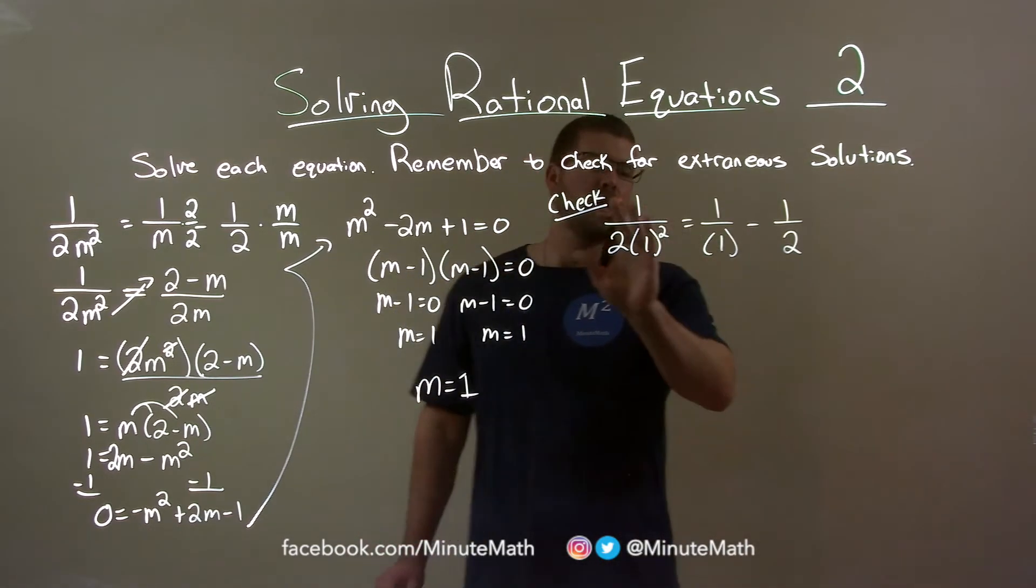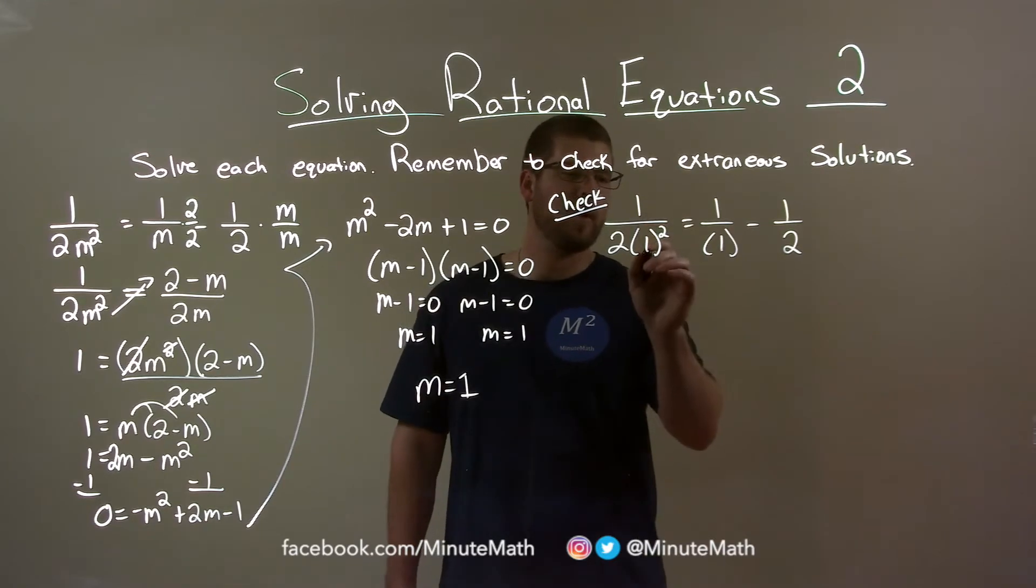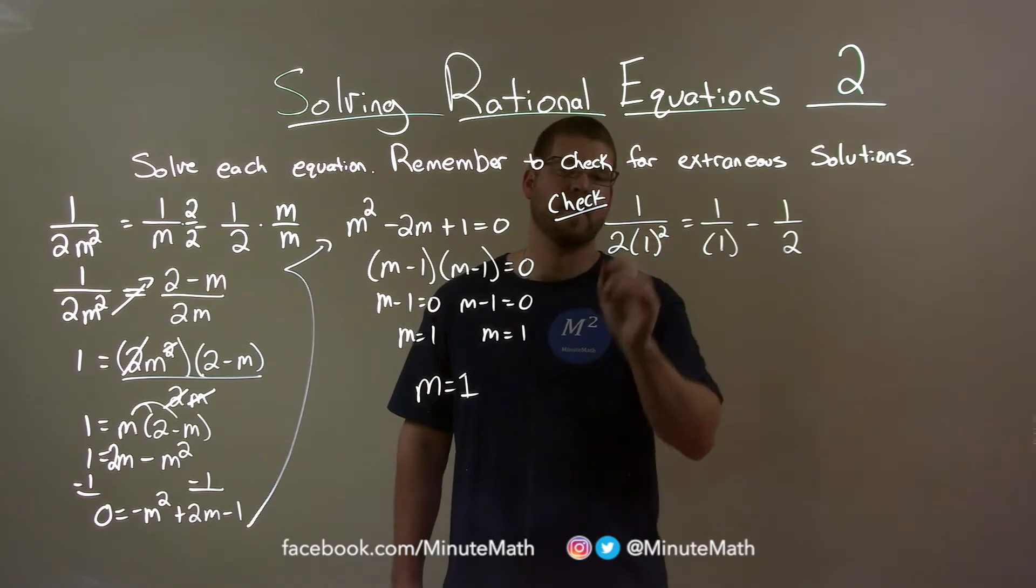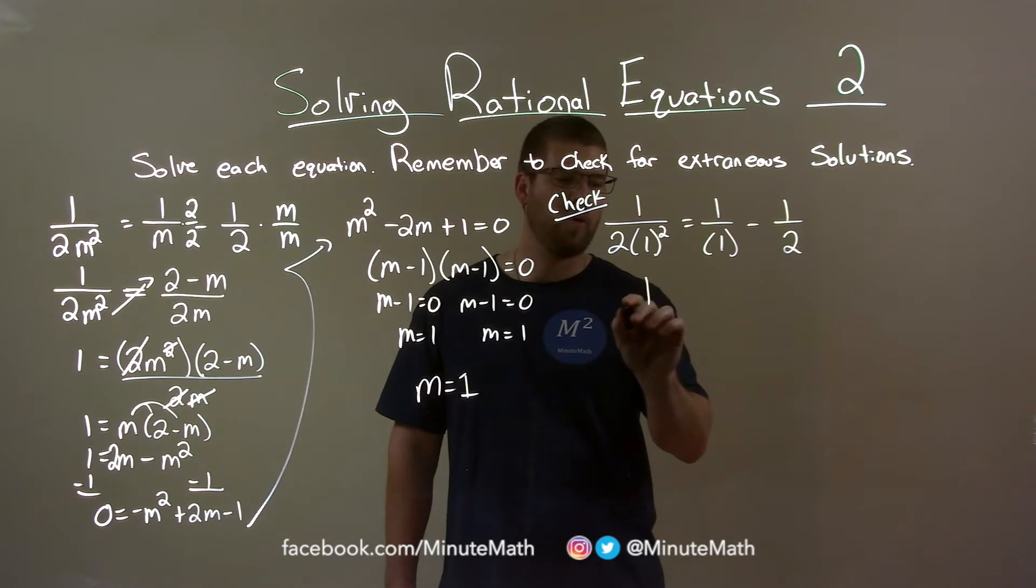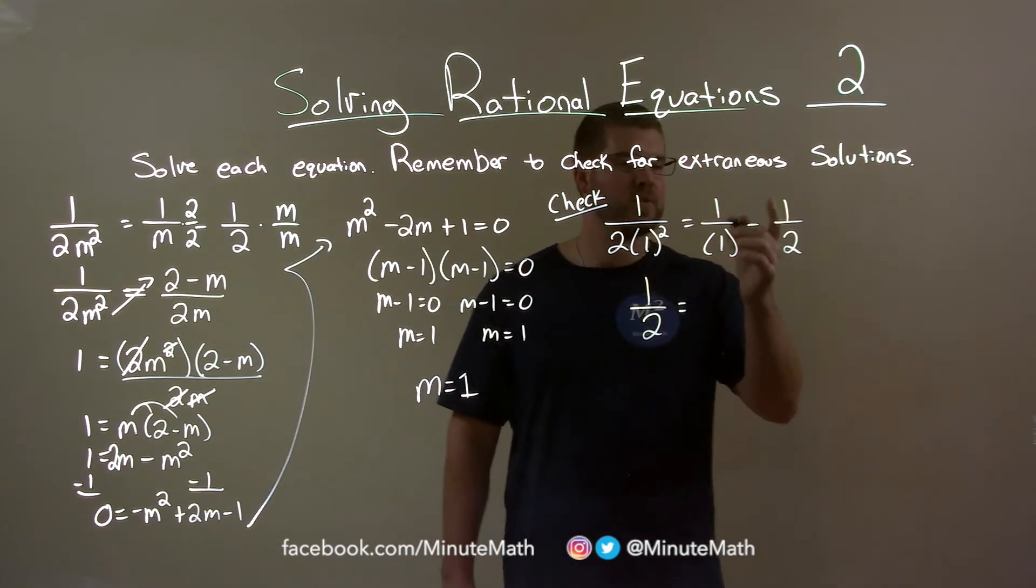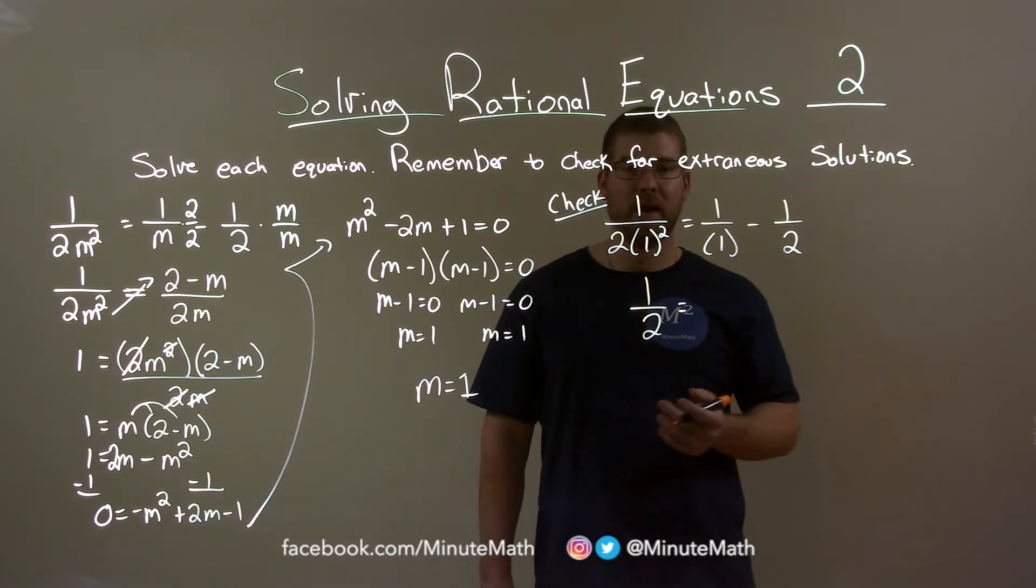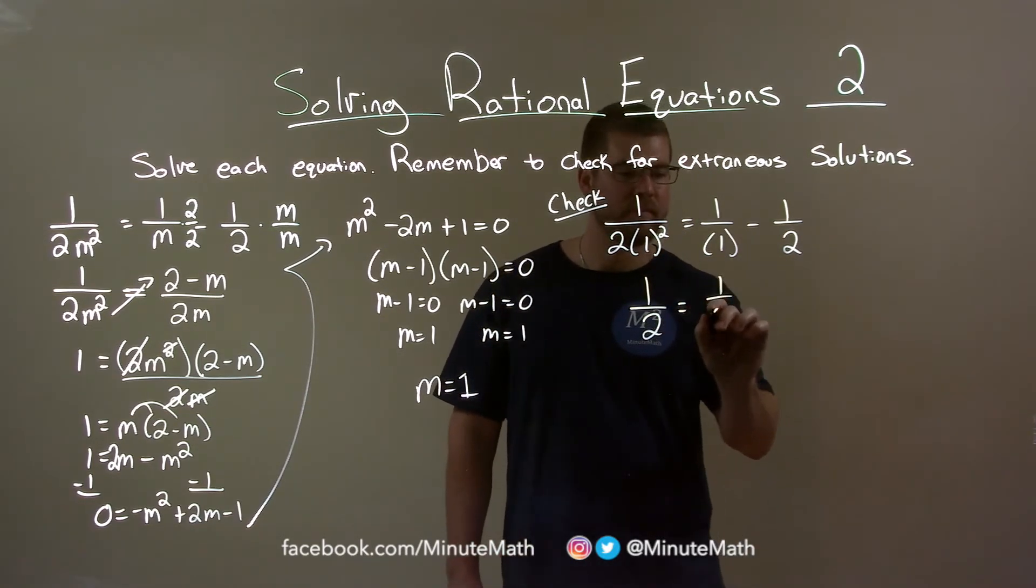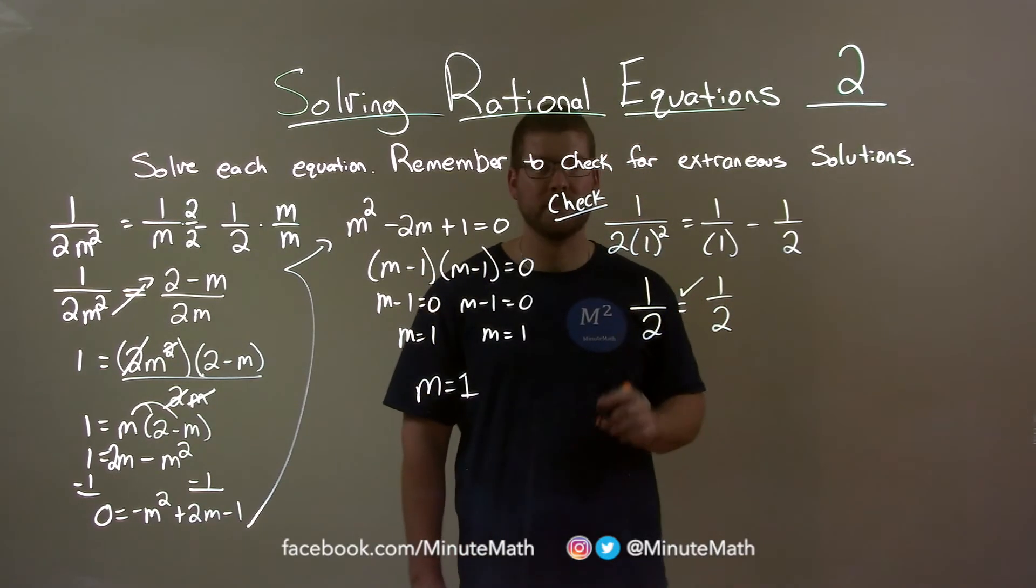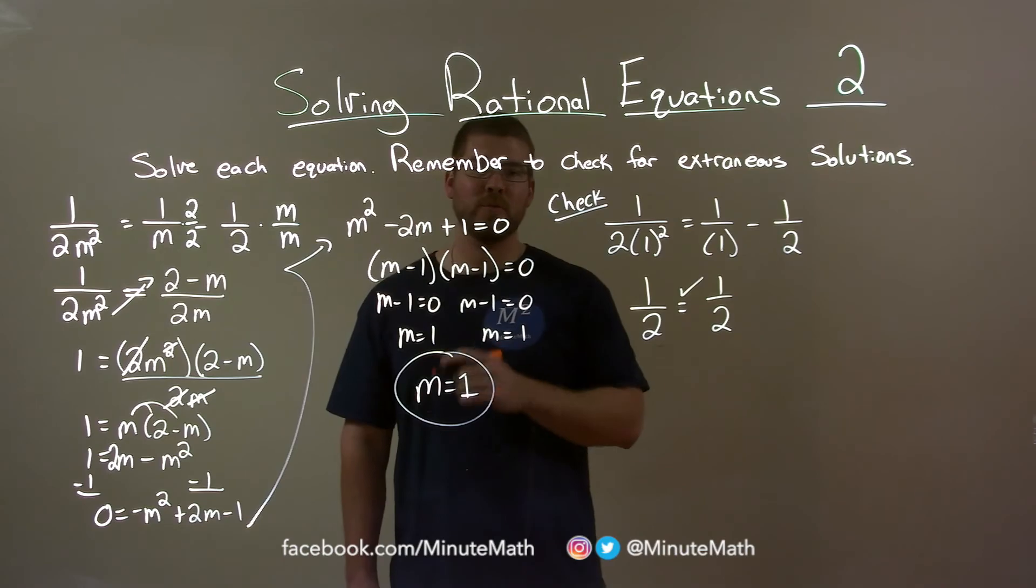Now we're going to keep the left and right hand sides separate and just simplify both of them and see if they're equal. 1 squared is just 1. 1 times 2 is 2. So we have 1 half here on the left. 1 over 1 minus 1 half. Well, 1 over 1 is 1, minus 1 half is 1 half. Left and right hand side are equal, meaning m equals 1 is our only true solution.